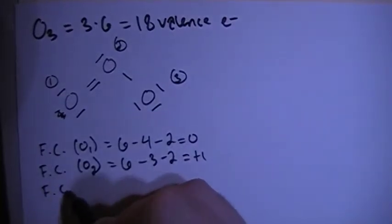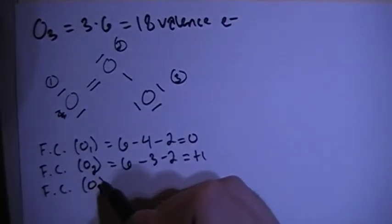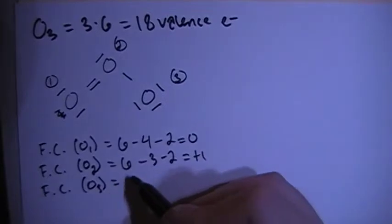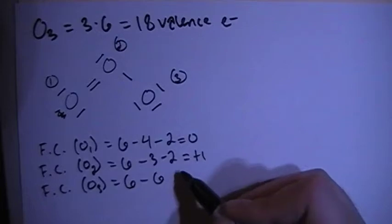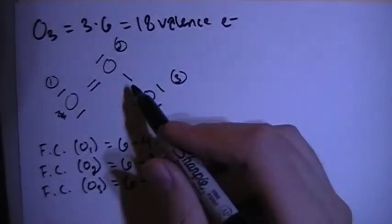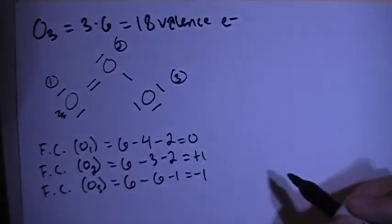And the formal charge of oxygen 3, which is this one here, is 6 valence brought in, minus 6 non-bonding electrons, minus 1 bond there, is a minus 1 formal charge.